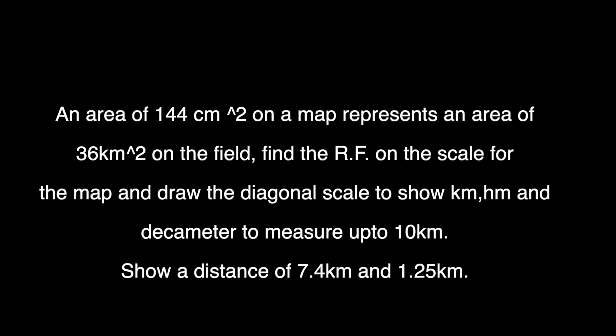Welcome to technical drawing. Today we are going to learn a diagonal scale where an area of 144 centimeter square on a map represents an area of 36 kilometer square on the field. First we need to find RF, and then we need to draw a diagonal scale to show kilometer, hectometer and decameter to measure up to 10 kilometers. Show a distance of 7.4 kilometer and 1.25 kilometer.